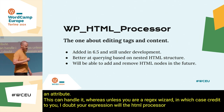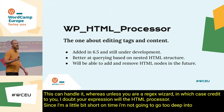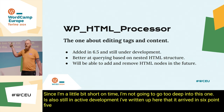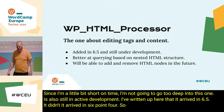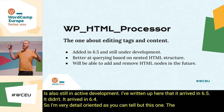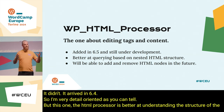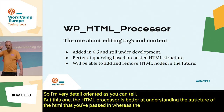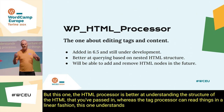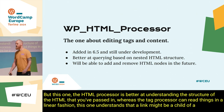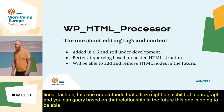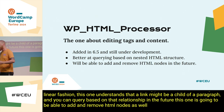The HTML Processor — since I'm a little short on time I won't go too deep into it. This one is also still in active development. I've written here that it arrived in 6.5; it didn't — it arrived in 6.4. So I'm very detail-oriented, as you can tell. The HTML Processor is better at understanding the structure of the HTML that you've passed in. Whereas the tag processor reads things in a linear fashion, this one understands that a link might be a child of a paragraph, and you can query based on that relationship. In the future, this one will be able to add and remove HTML nodes, as well as unwrapping and wrapping existing nodes.